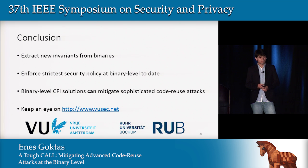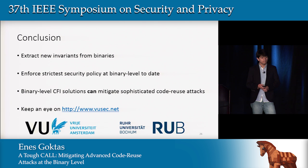Thanks for the talk. You showed roughly 70-80% precision rate for finding argument counts at both call sites and at functions. When you're wrong, are you consistently over or under — or do you have cases where you've accidentally over-counted the number of arguments for a function, or under-counted the number of arguments for a call site, and thus would block legitimate calls when there's no attack present and cause the program to crash?